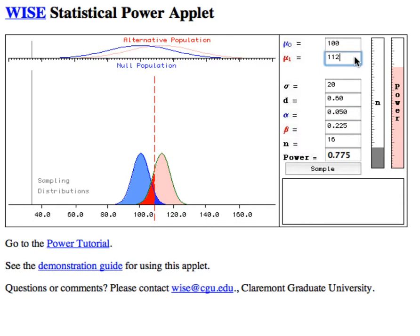Lastly, and this is very intuitive, power should increase if the actual difference between the means is even greater. So if I increase it to 120, we can see power is virtually 100%. If we decrease it to 105, power goes far down.